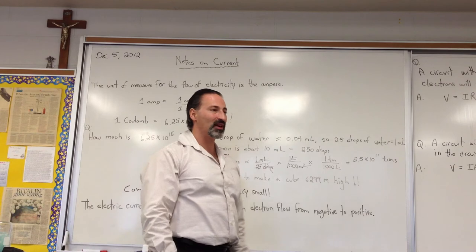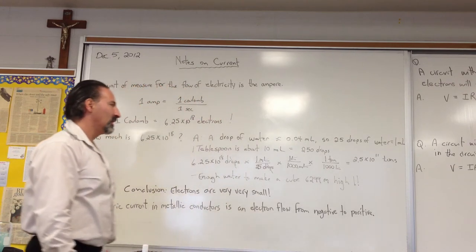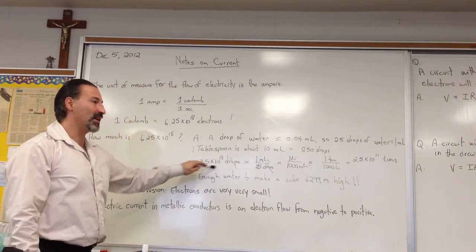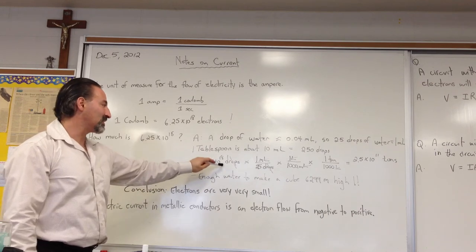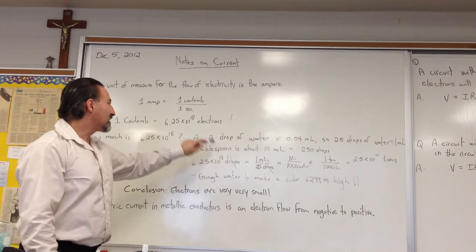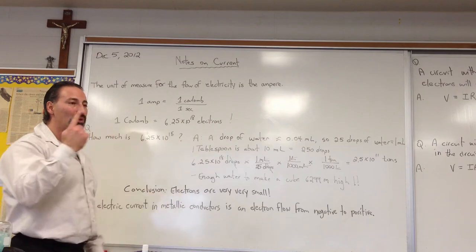That's how much 2.5 times 10 to the 11 tons of water is. And that's how many drops of water there would be in that aquarium. 6.25 times 10 to the 18. And that number is how many electrons there are in 1 coulomb of electricity.